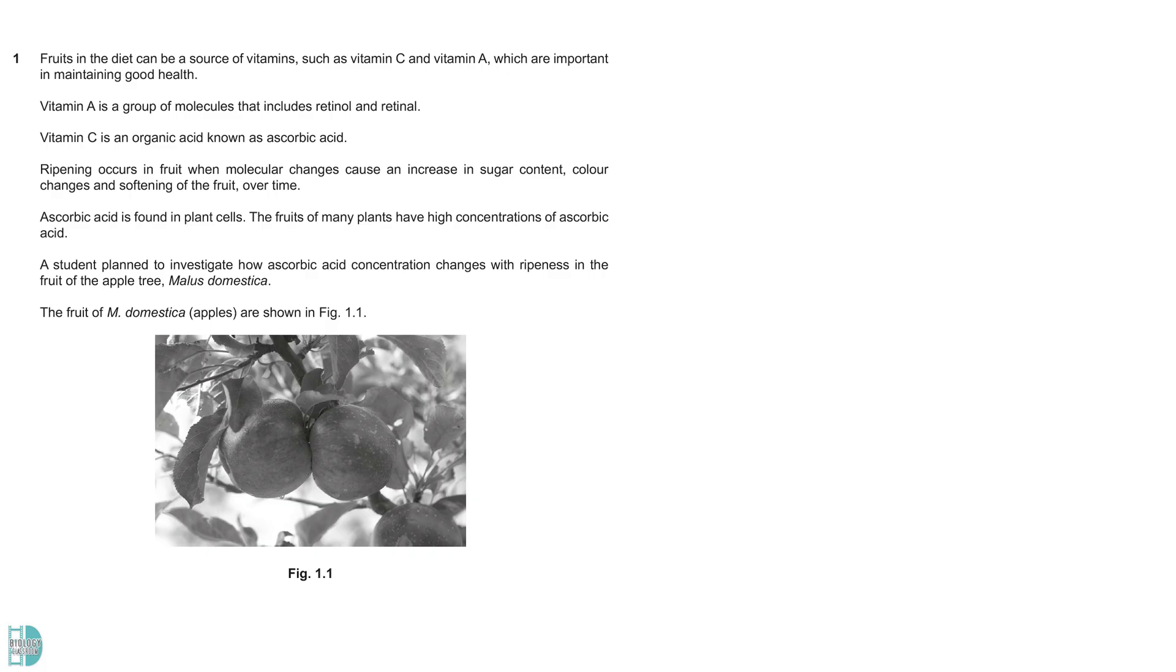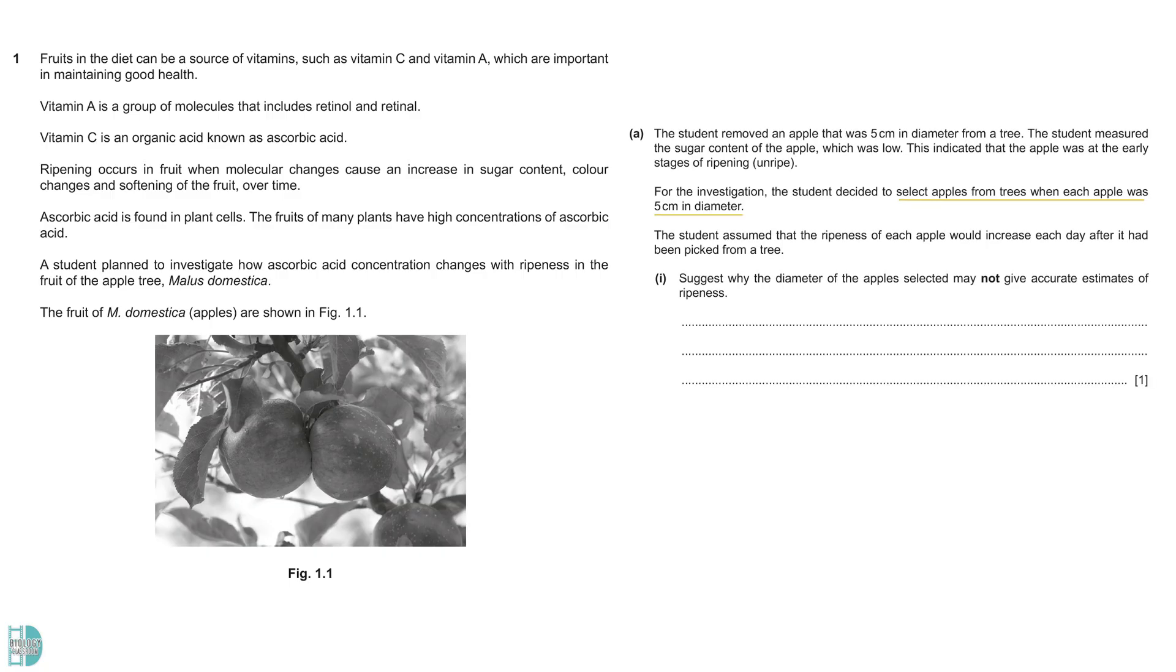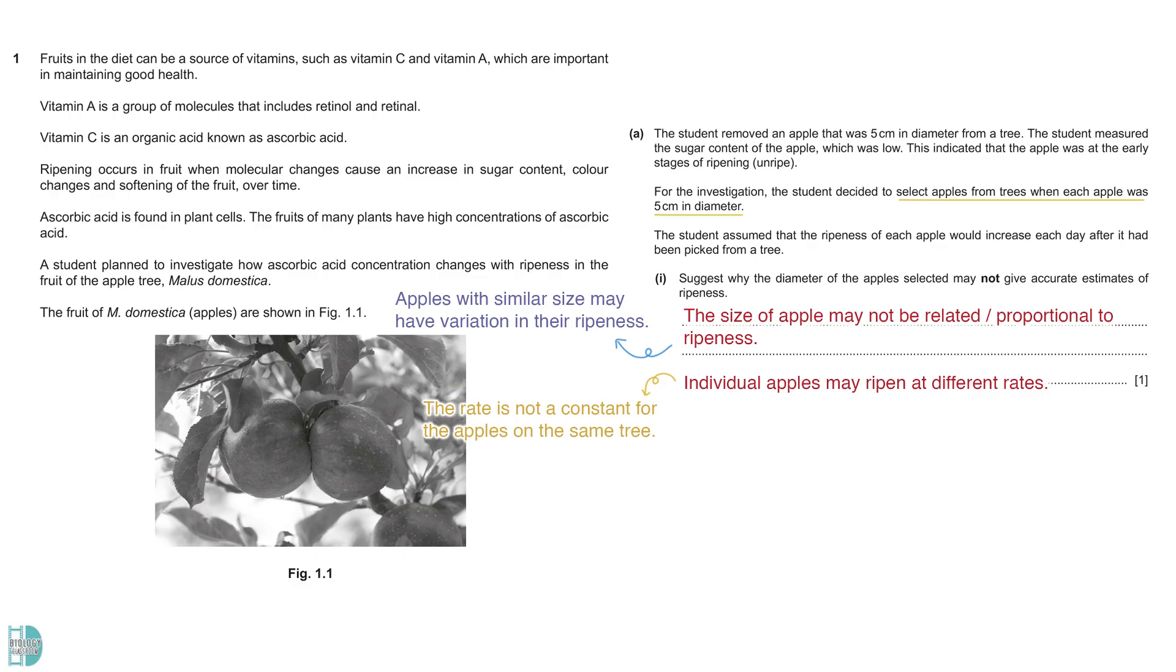Question 1 is about an experiment that investigates how ascorbic acid concentration changes with apples ripeness. Part A says that the student selects apples that are 5 cm in diameter for the test, assuming that they have the same ripeness. You are asked to suggest why this may not be accurate. The size of an apple may not be related to or proportional to its ripeness. It is possible to have variation despite their similarity in size. Besides, each apple may ripen at a different rate.